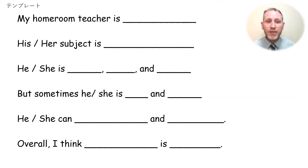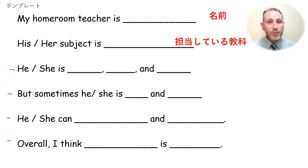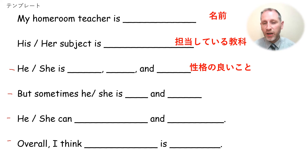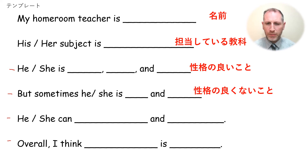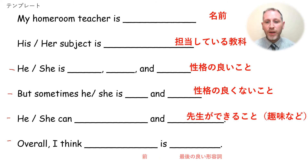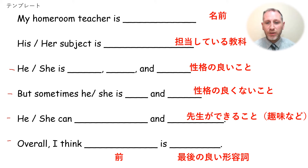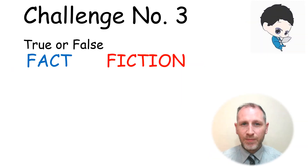Here's the template: 'My homeroom teacher is [name]. His/her subject is [subject]. He/she is [character]. Sometimes he/she is [something]. He/she can [ability]. And overall, I think [final opinion].' The first sentence is the name. What does the person teach? Something about their character — good things like kind, friendly, happy. But sometimes something not good, like angry or tired. Something your teacher can do. And finally, the overall positive thing about your homeroom teacher.